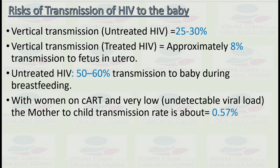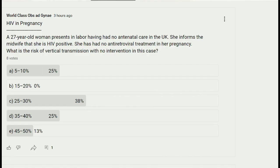To summarize: the first question asked about vertical transmission in untreated HIV — answer was 25 to 30 percent. The earlier question about undetectable viral load had an answer of 0.5 percent. If the woman is on cART and has an undetectable viral load, the mother-to-child transmission rate is 0.57 percent. So the answer to that question is C. Thank you so much — I have explained a few MCQs related to HIV in pregnancy.